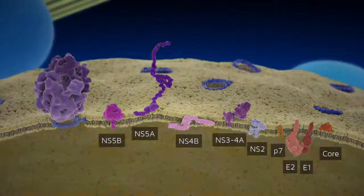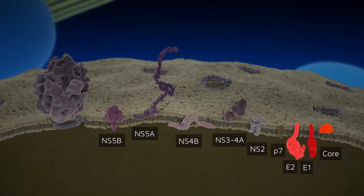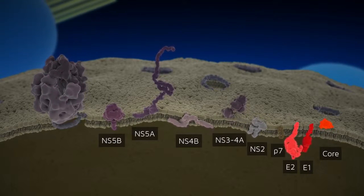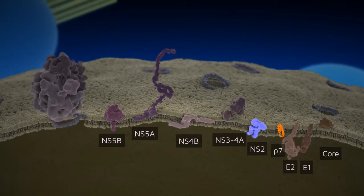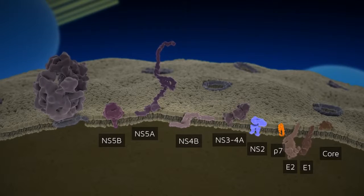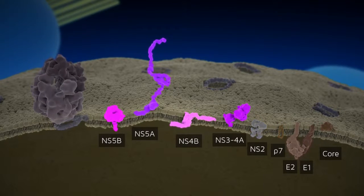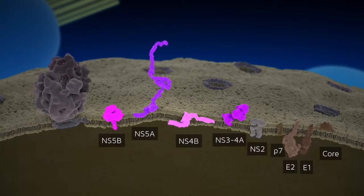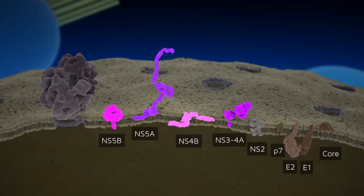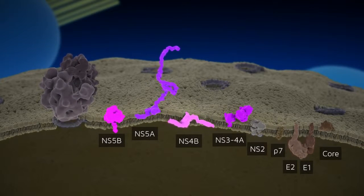The structural proteins which make up the viral particle comprise core and the envelope glycoproteins E1 and E2. P7 and NS2 support viral particle production while not being incorporated into the particle. The replicase components NS34A, NS4B, NS5A and NS5B are sufficient to support viral RNA replication.